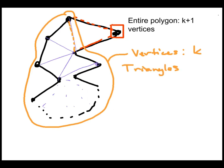Well, now I can use the inductive hypothesis. What I have here is a polygon with k vertices, and it's been triangulated. So the inductive hypothesis tells me that there must be k minus 2 triangles in this polygon.